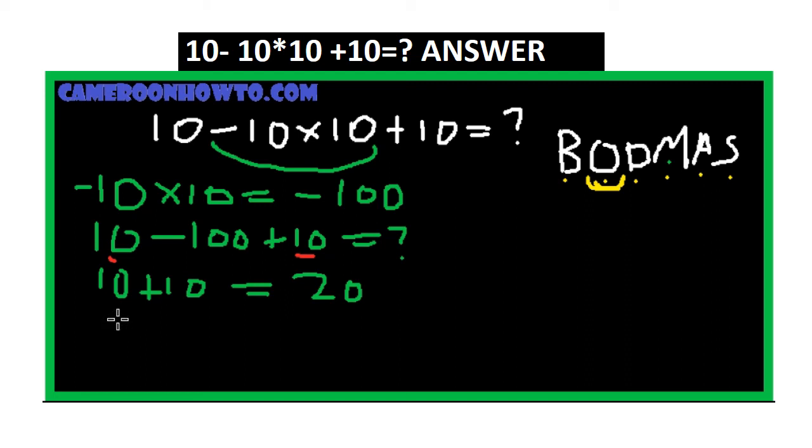Okay, so the last thing to do is subtraction. You take 20 minus 100, you'll be equal to negative 80.